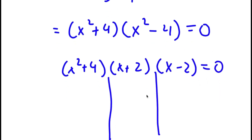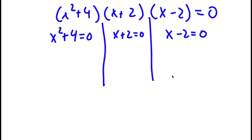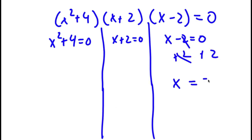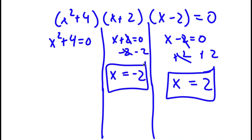This gives three equations. From x minus 2 equals 0, adding 2 on both sides gives x equals 2 — the first solution. From x plus 2 equals 0, subtracting 2 on both sides gives x equals negative 2 — the second solution.